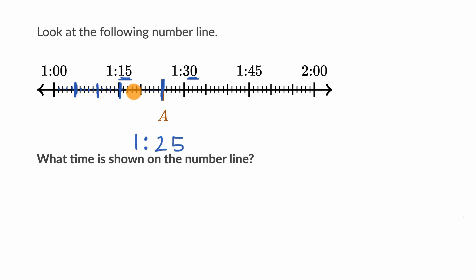Another way you could have thought about it is each of these medium tick marks represent five minutes. So that's five, that's another five. This time right over here is going to be five plus five is ten. It's going to be 10 minutes past one fifteen. Well, 15 plus 10 is 25 again. So the time shown on the number line is 1:25.